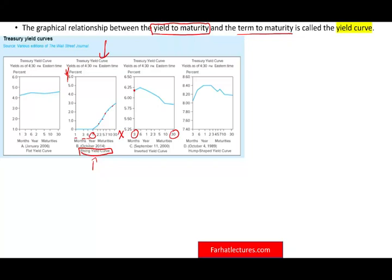Just want to let you know that the yield curve could take many forms. Here the yield curve is humped — it goes up, then comes down. Here it's almost straight, as seen in January 2006 and October 4th, 1989. But most of the time the yield curve is rising. This is what you should expect from the yield curve.